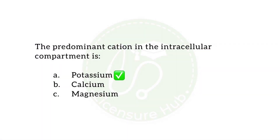Inside the cell, the most predominant positively charged ion — the cation — is potassium. Outside the cell, the most predominant electrolyte is sodium. The question asks for the predominant cation in the intracellular compartment, so we have no choice but to take potassium as our correct answer.